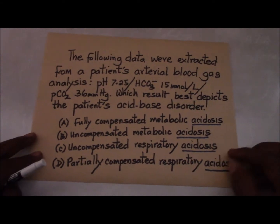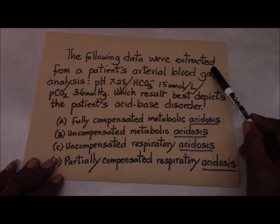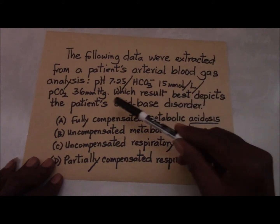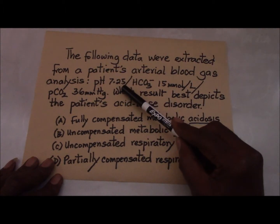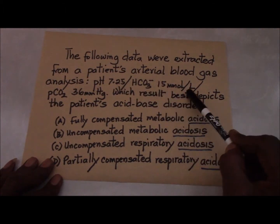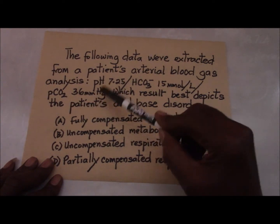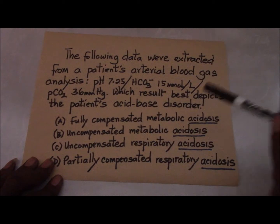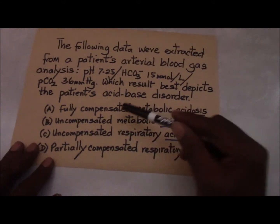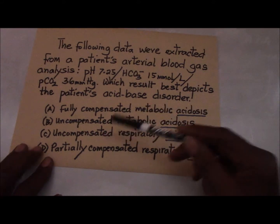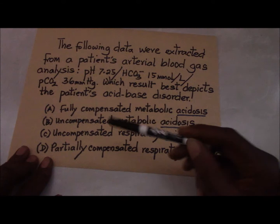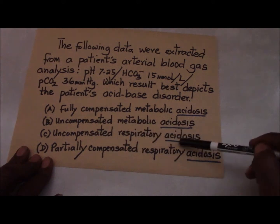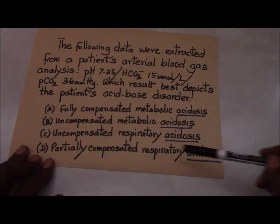Here then is an example of the kind of thing to anticipate in the exam. This question says the following data were extracted from a patient's arterial blood gas analysis: the pH is 7.25, the bicarbonate ion is 15 millimoles per liter, and the partial pressure of carbon dioxide is 36 millimeters of mercury. The question is: which result best depicts the patient's acid-base disorder? A — fully compensated metabolic acidosis; B — uncompensated metabolic acidosis; C — uncompensated respiratory acidosis; D — partially compensated respiratory acidosis.